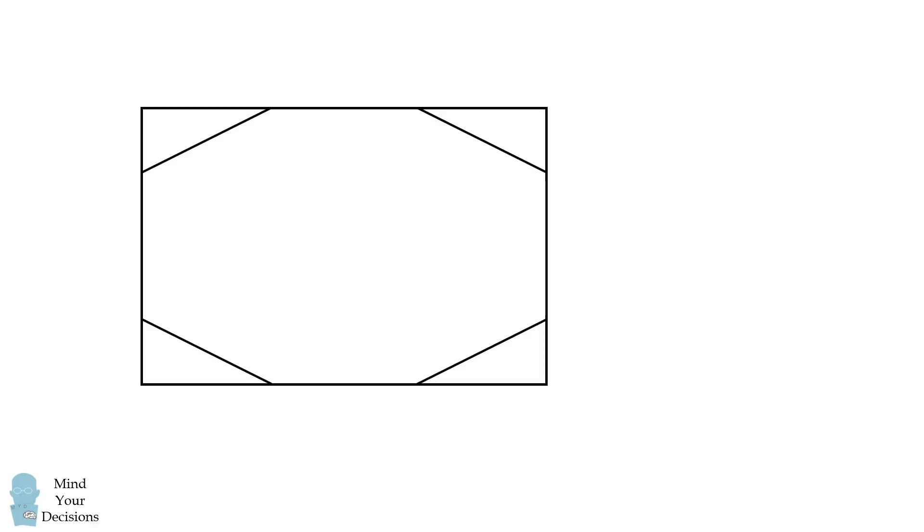So let's solve this problem. We'll label the side length of the octagon by the letter S. We'll label these two lengths as Y, and these two lengths as X.